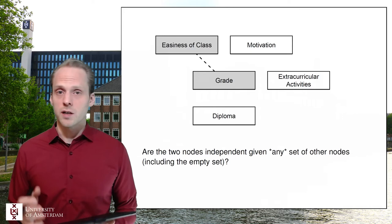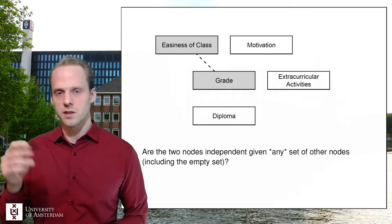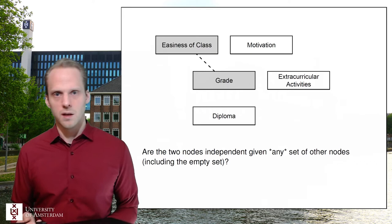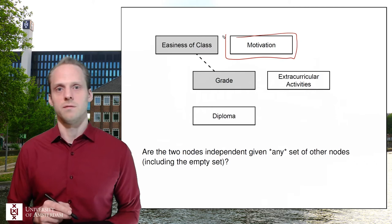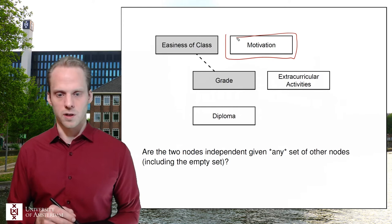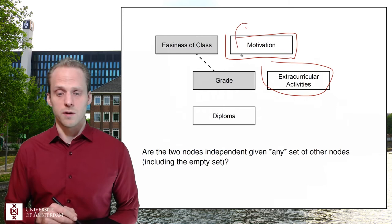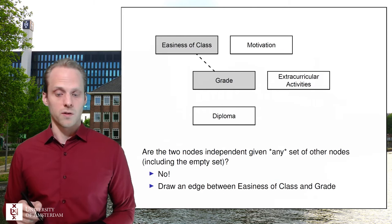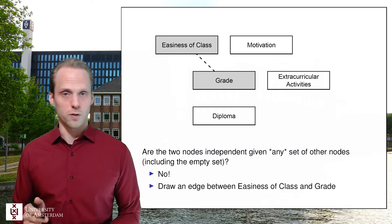Next, take easiness of class and grade. First we check: are they correlated? Yes. Then we try to condition on motivation — still correlated. Condition on activities? Still correlated. Condition on diploma? Still correlated. Condition on all of them? Still correlated. We tried everything and can't make them independent, so we draw an edge between easiness of class and grade. Similarly, grade and motivation: there's nothing we can condition on to make them independent, so we draw an edge there too.